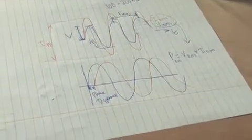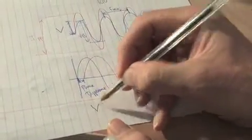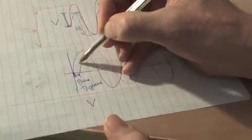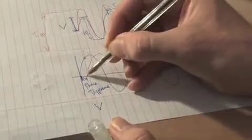So what we do there to calculate the power, and this still holds true for when they're in phase, is for each data point in time, we do the voltage, whatever that might be. So let's take this data point, for example. We'll do the voltage times the current.